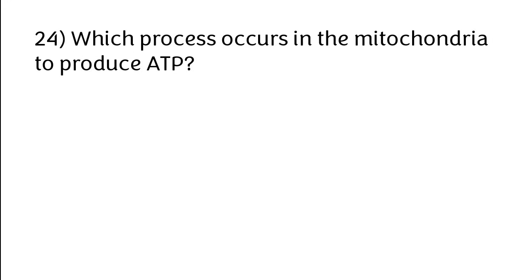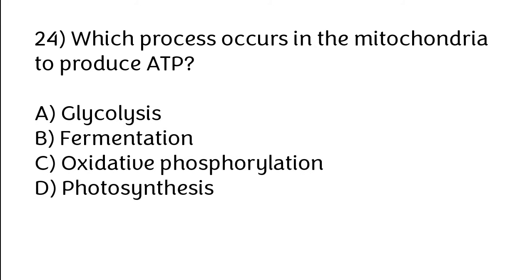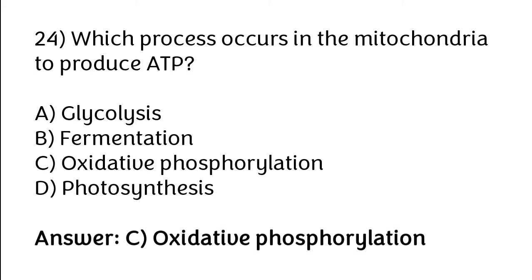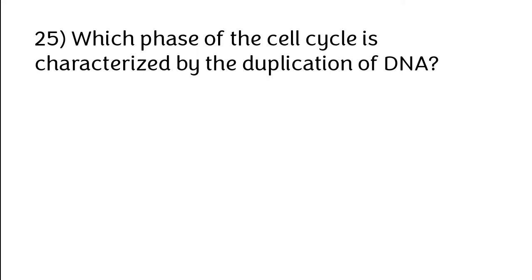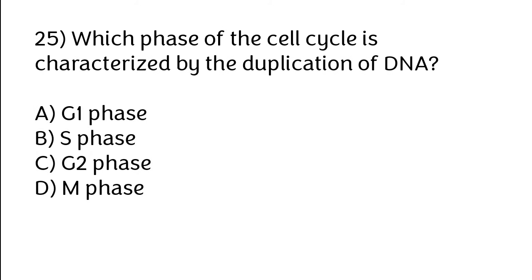Which process occurs in the mitochondria to produce ATP? Options: glycolysis, fermentation, oxidative phosphorylation, photosynthesis. The correct answer is option C — oxidative phosphorylation occurs in the mitochondria to produce ATP. Which phase of the cell cycle is characterized by the duplication of DNA? Options: G1 phase, S phase, G2 phase, M phase. The correct answer is option B — the S phase is characterized by the duplication of DNA.